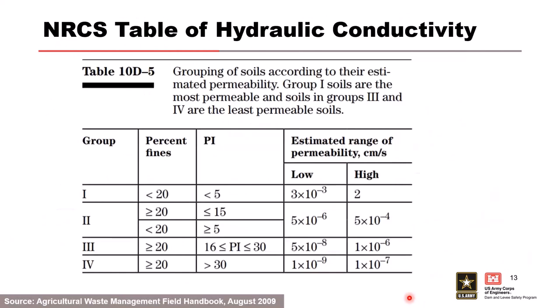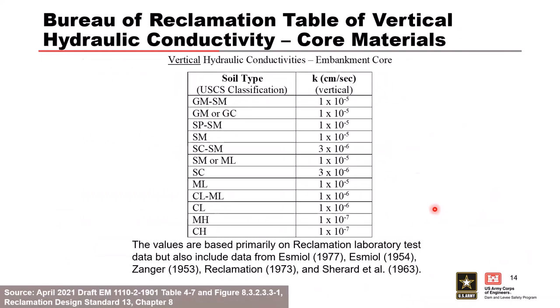A lot of government documents nowadays have compiled tables of hydraulic conductivity. NRCS has one where you can get into pretty high percent fines, high plasticity indices, and it gives you a range of permeability to at least get started on your seepage analysis. Reclamation compiled multiple tables in their most recent seepage guidance based on both man-compacted and natural soils. This one shows hydraulic conductivity of embankment cores, compiled from Reclamation lab data and other sources over the last 50 years, organized by USCS classification.